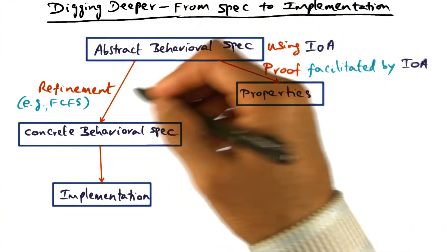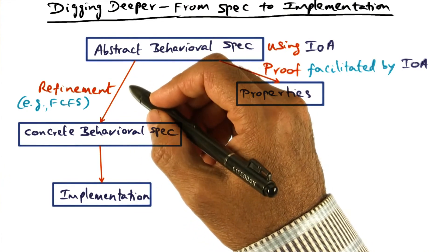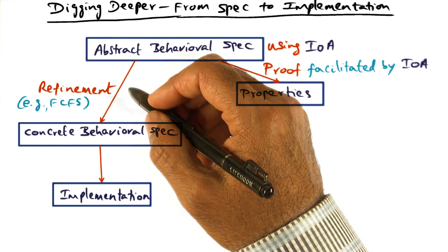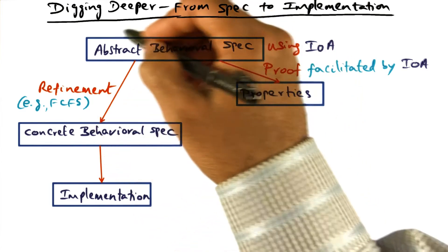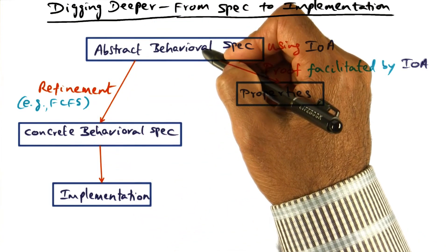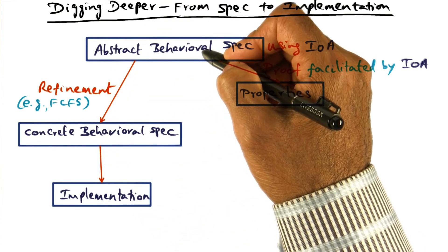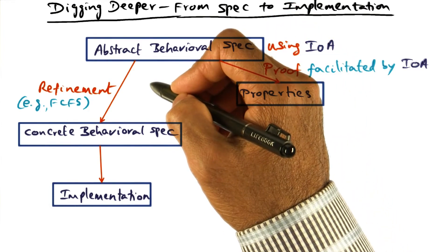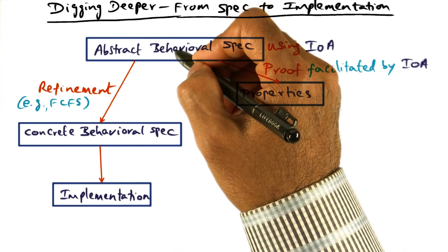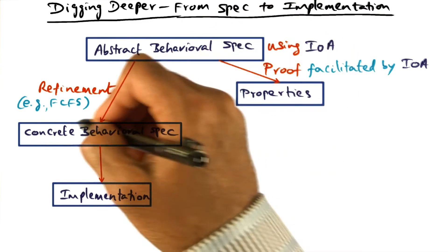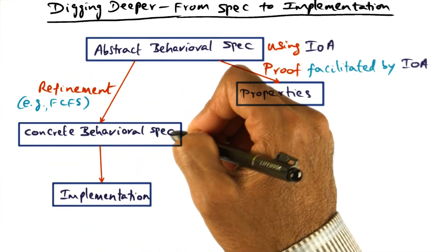For instance, the refinement could be that if I have a queue data structure, I want first come first serve property. How do I make sure that the abstract behavioral spec adheres to that additional execution condition? Those are the kinds of things that I can do in refining the abstract behavioral spec to get a concrete behavioral spec.